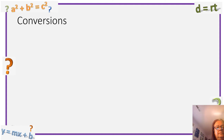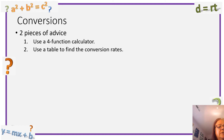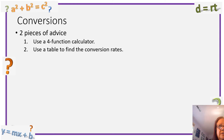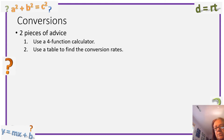So, conversions. We're gonna talk about converting from one set of units to another. There are two things I'd like to give you advice about. Number one, use a four-function calculator — don't try to do this in your head or on paper, just use a calculator. It's gonna be much easier. Also use a table to find the conversion rates. You can find them online. I'll be giving you some as we go along, but get a table. It makes life much easier.